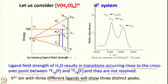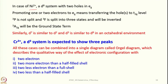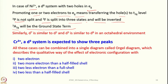Vanadium(3+) with three different ligands would show three distinct peaks, but in the case of hexaaqua or homoleptic complexes, two transitions may be seen because two are very closely spaced. For nickel(2+), a D8 system with two holes in EG, promoting one or two electrons to EG means transferring holes to the T2G level. ³P is not split and remains degenerate; ³F is split into three states and will be inverted, making ³A2g the new ground term.